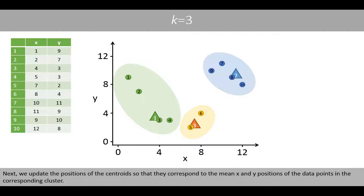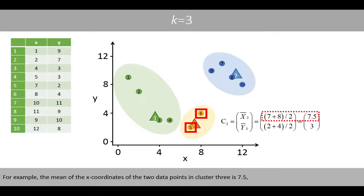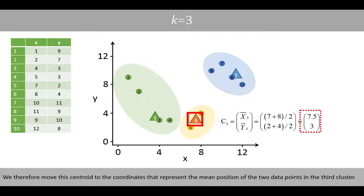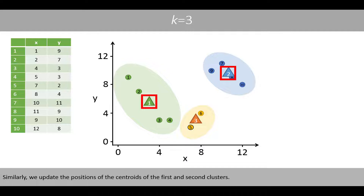Next, we update the positions of the centroids so that they correspond to the mean x and y positions of the data points in the corresponding cluster. For example, the mean of the x coordinates of the two data points in cluster three is 7.5, and the mean of the y coordinates is 3. We therefore move this centroid to the coordinates that represent the mean position of the two data points in the third cluster. Similarly, we update the positions of the centroids of the first and second clusters.